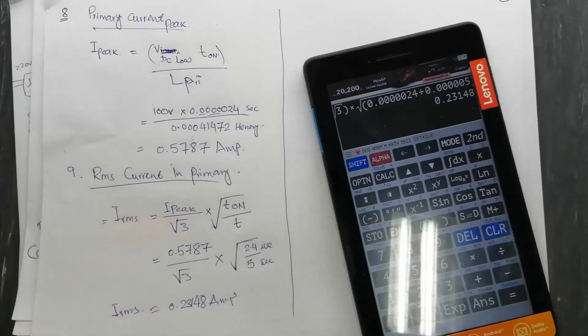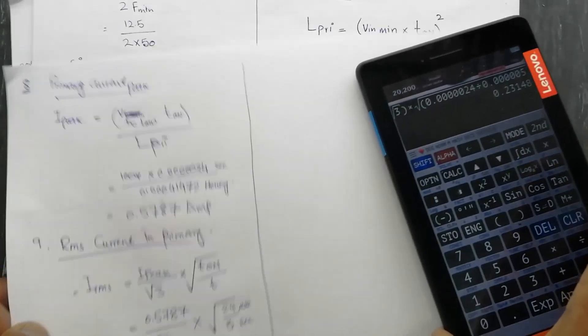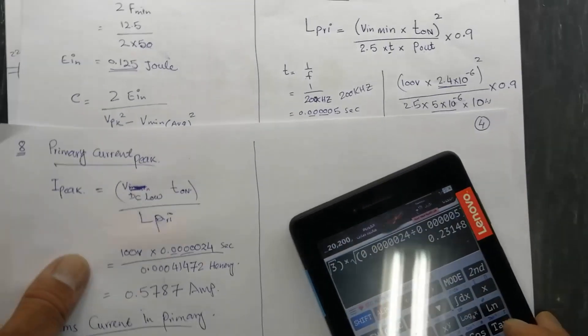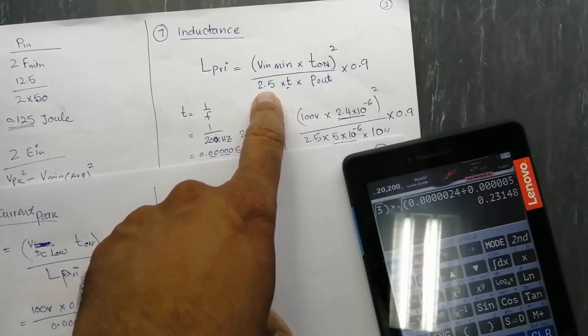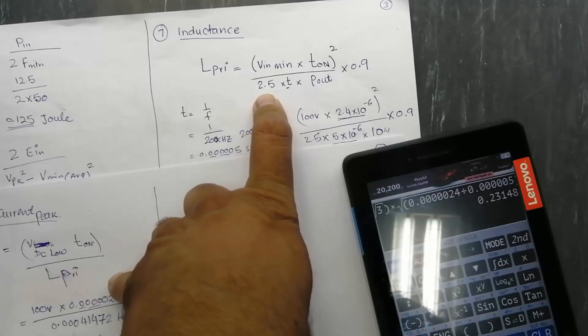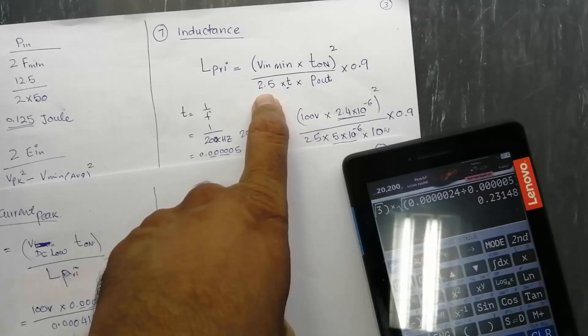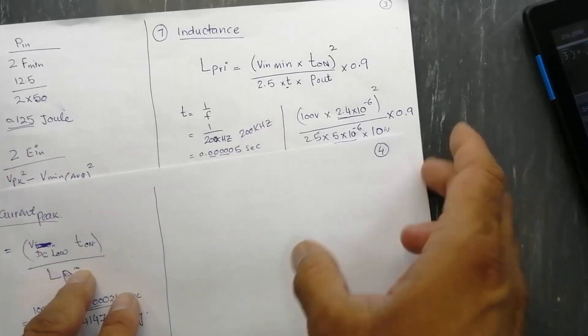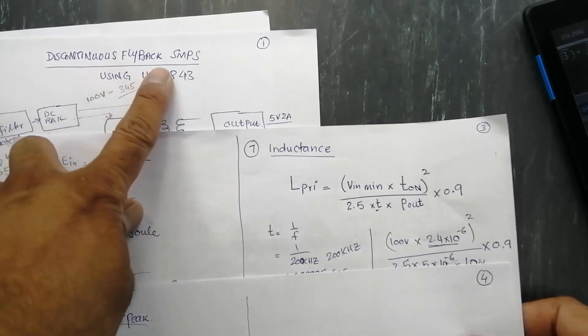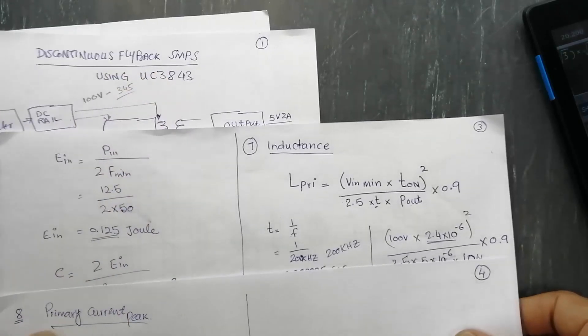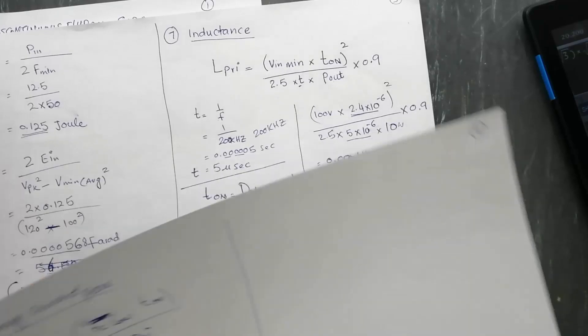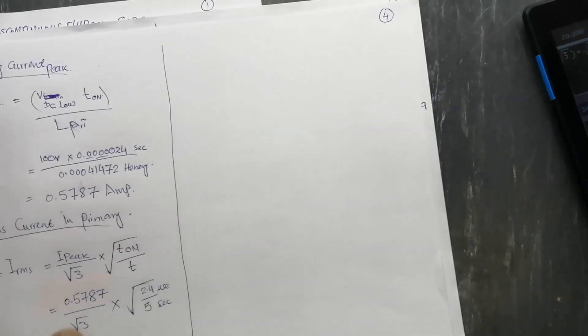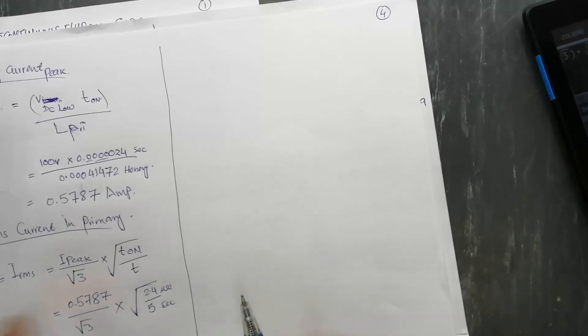I hope this video is good for you. If you have any question, let me know in the comment box. In my last video, there was a question from one of my viewers. He asked me why I am using 2.5. 2.5 is a constant for the formula to calculate continuous and discontinuous flybacks. We have to maintain this 2.5. And then there was another question: why we are selecting 0.48 percent duty cycle?